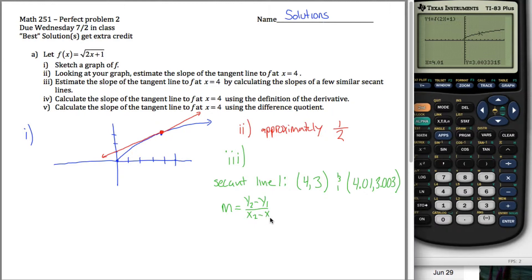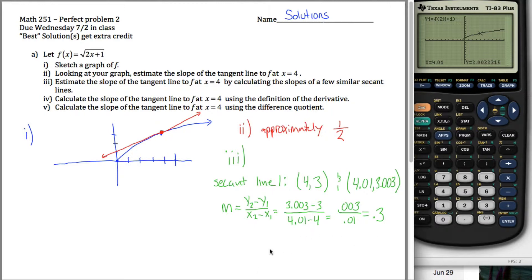To calculate the slope of this secant line, the slope is the difference in y-coordinates over the difference in x-coordinates. Calling this x1, y1 and the other x2, y2, I get 3.00333 minus 3 divided by 4.01 minus 4. In other words, it is 0.003 divided by 0.01, which is 0.3.